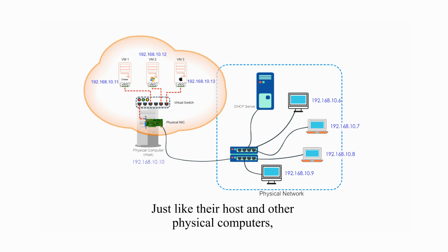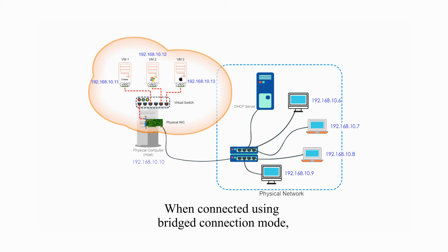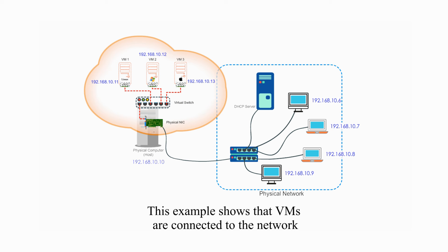Just like their host and other physical computers, virtual machines obtain IP addressing information from a DHCP server on the physical network. When connected using bridged connection mode, a virtual machine appears to other nodes as just another computer on the network.